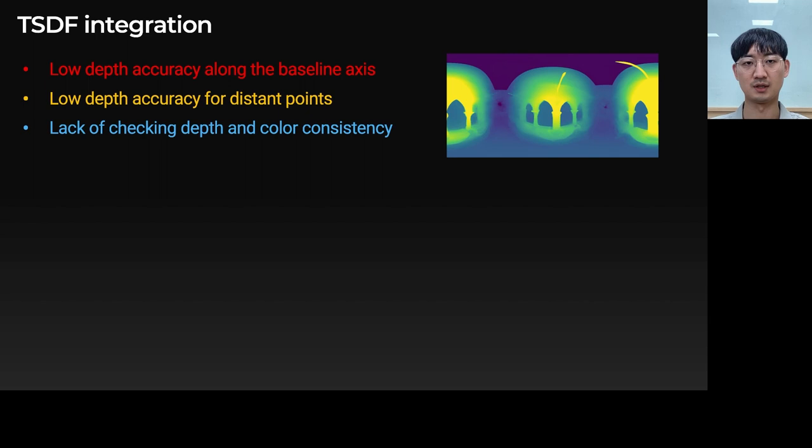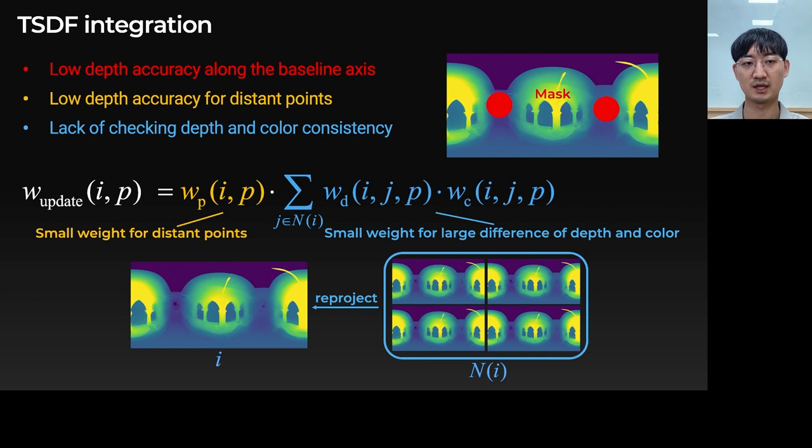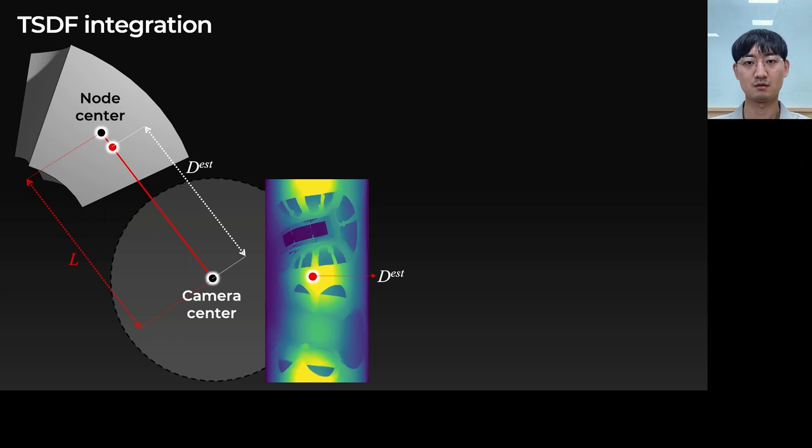We solve the first problem by simply masking out circular regions around the epipoles. To solve the remaining problems, we adjust how much the depth estimates will be involved in the TSDF value update. Less accurate depth estimates from distant points have a small Gaussian weight for TSDF update. And we check depth and color consistency by reprojecting neighbor frames to the target frame and penalize by giving a small weight when they are inconsistent.